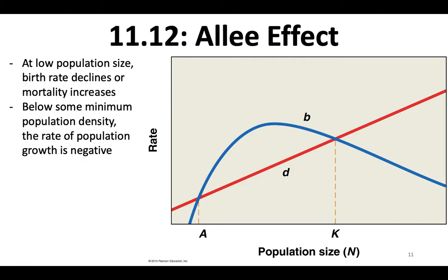The Allee effect is when at low population size, birth rates decline or mortality increases. Below some minimum density, the rate of population growth is negative — this is that precipitous drop in population size. Below some minimum density, the growth of the population actually goes negative and it is likely to go extinct. That's called the Allee effect.